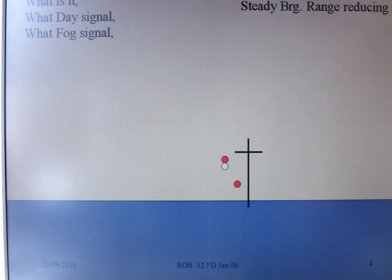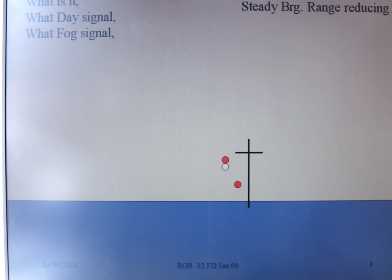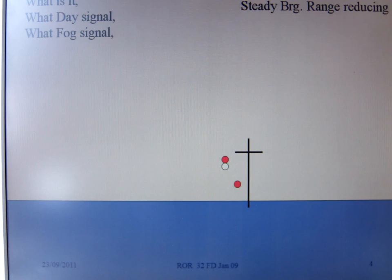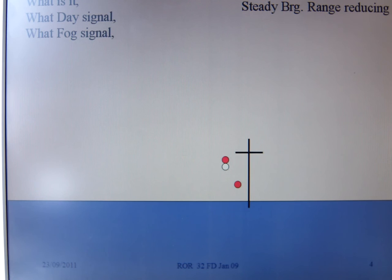Here we have an all-round red over an all-round white. She is a vessel engaged in fishing, other than trawling, with nets extending horizontally into the seaway. The nets do not exceed 150 metres. The red side light indicates that she is one of those three vessels, NUC, RAM or fishing, and if I see the side lights or the stern light, she's actually making way through the water. There's no indication of length for this vessel. The day signal would be two cones apex together, where it can best be seen. The fog signal, she is a hampered vessel, so she would sound one long followed by two short on the ship's whistle, in intervals not exceeding two minutes.